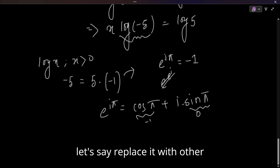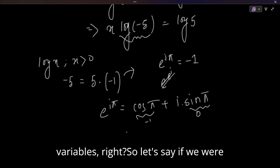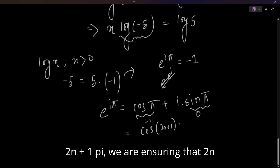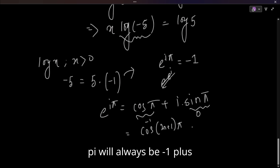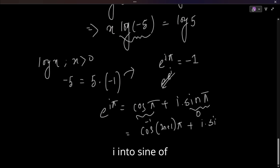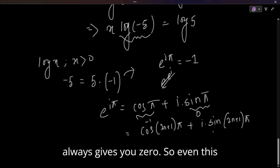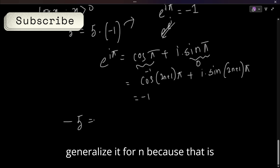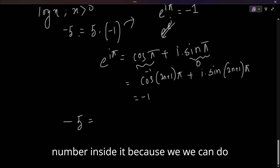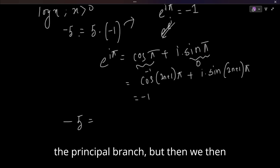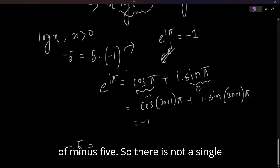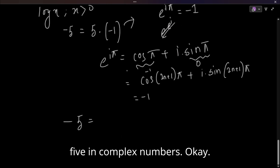We can generalize this. Consider cos((2n+1)π): since 2n+1 is always odd, cos((2n+1)π) = -1, and sin((2n+1)π) = 0 for any integer n. So e^(i(2n+1)π) = -1 for all integers n. This generalization is important because the logarithm of a negative complex number is multi-valued, not a single value.